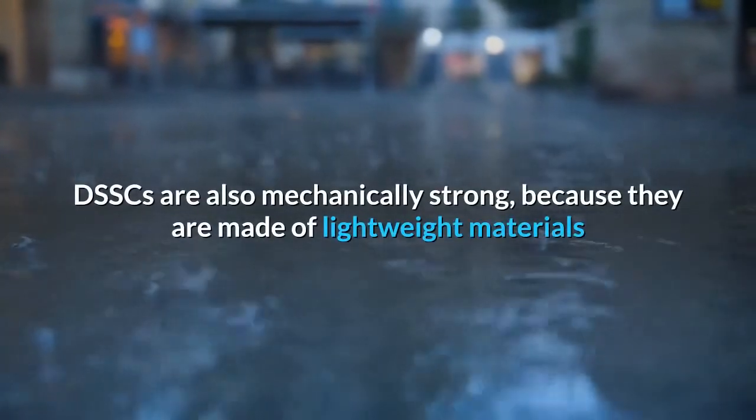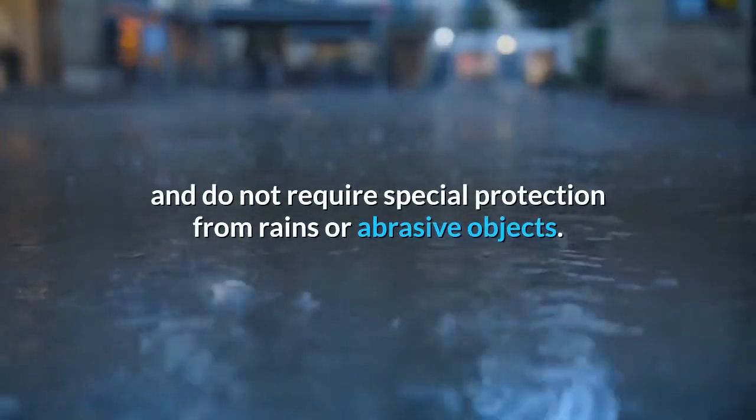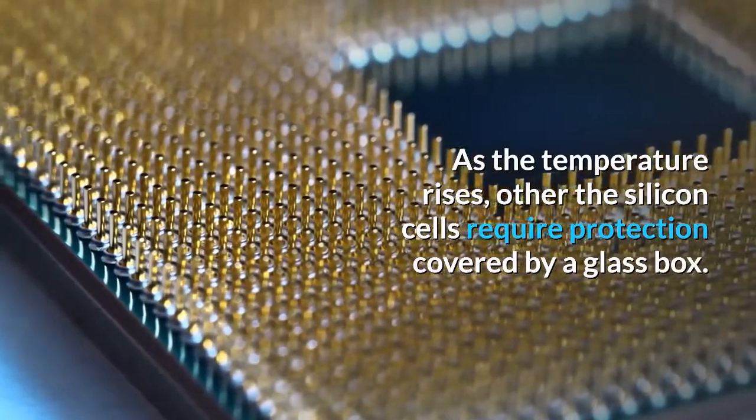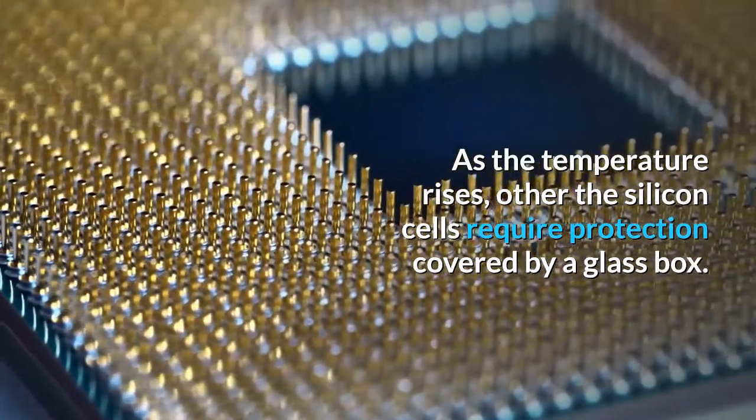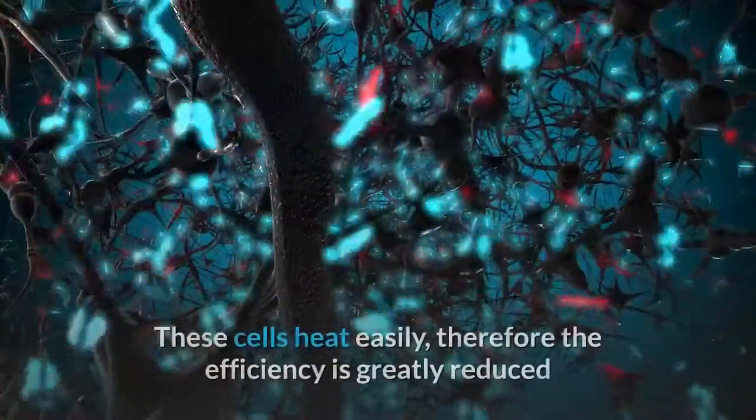DSSCs are also mechanically strong because they are made of lightweight materials and do not require special protection from rains or abrasive objects. As the temperature rises, other silicon cells require protection covered by a glass box. These cells heat easily, therefore the efficiency is greatly reduced because of internal temperature.